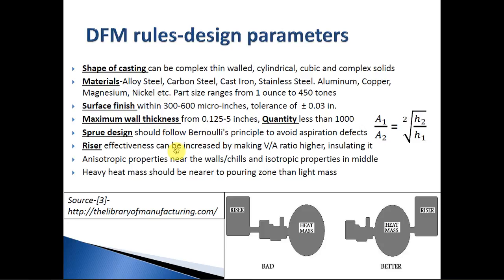Riser effectiveness can be increased by making the volume-to-surface-area ratio higher and by insulating it, in order to supply more molten metal to potential shrinkage areas in the mold cavity. The cast product normally has columnar dendritic structures near the mold wall and an isotropic structure in the middle, and that portion can be trimmed off through further processes depending on whether it is required.